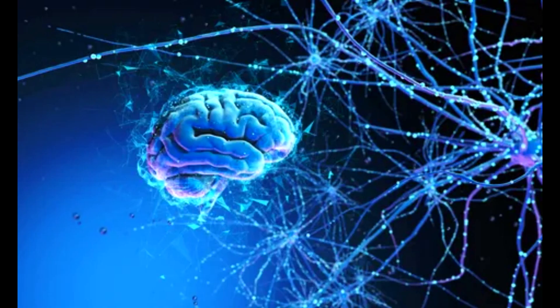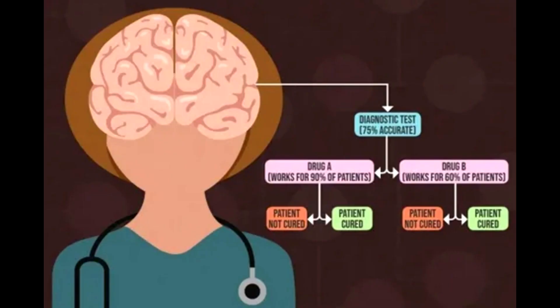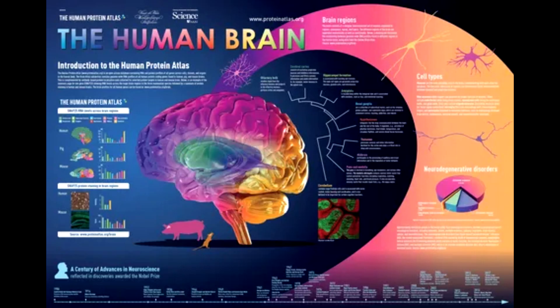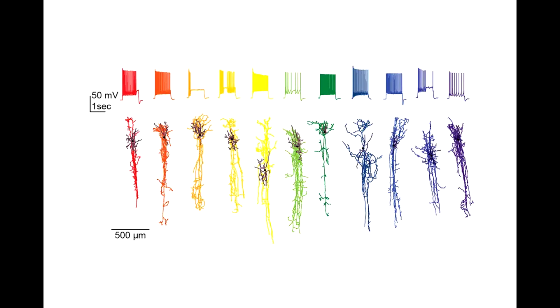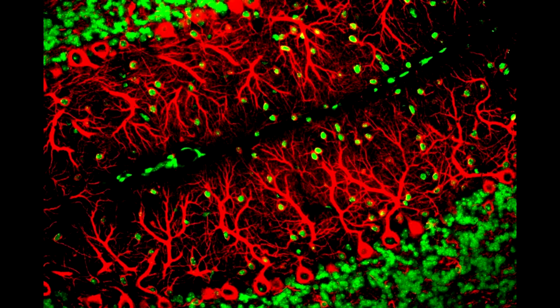The results were described in 21 papers published on Thursday in Science and several other journals. Ed Lein, a neuroscientist at the Allen Institute for Brain Science in Seattle who led five of the studies, said that the findings were made possible by new technologies that allowed the researchers to probe millions of human brain cells collected from biopsied tissue or cadavers.